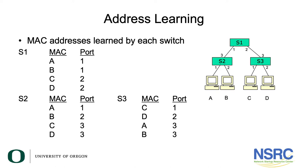This diagram shows a small switch network. Each of the switches S1, S2, and S3 has learned MAC addresses A, B, C, and D, and which ports they're on. Depending on which switch you are and where you are in the network, you will have a different view, and therefore a different port you need to send to in order to reach a particular MAC address. For example, if you're on switch S2 and trying to send to device D, it has to come out of port 3, which means going up towards switch S1.